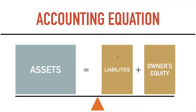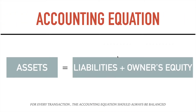It's either yung isang side will be mas mabigat kesa dun sa isa. So it's important na yung pinagsamang liabilities at owner's equity ay equal sa asset. It doesn't necessarily mean na kailangan 50-50 sila — minsan mas malaki si liabilities, minsan mas malaki naman si owner's equity — but ganun pa man, pag pinagsama natin sila, dapat equal sila kay asset. So this is the accounting equation: assets equals liabilities plus owner's equity.